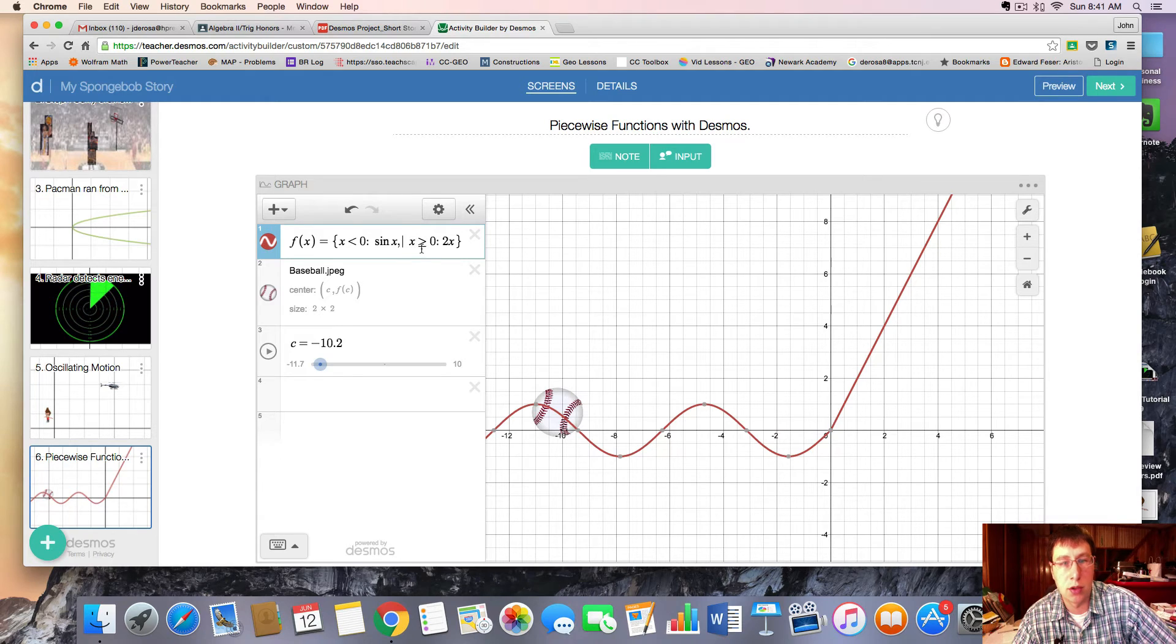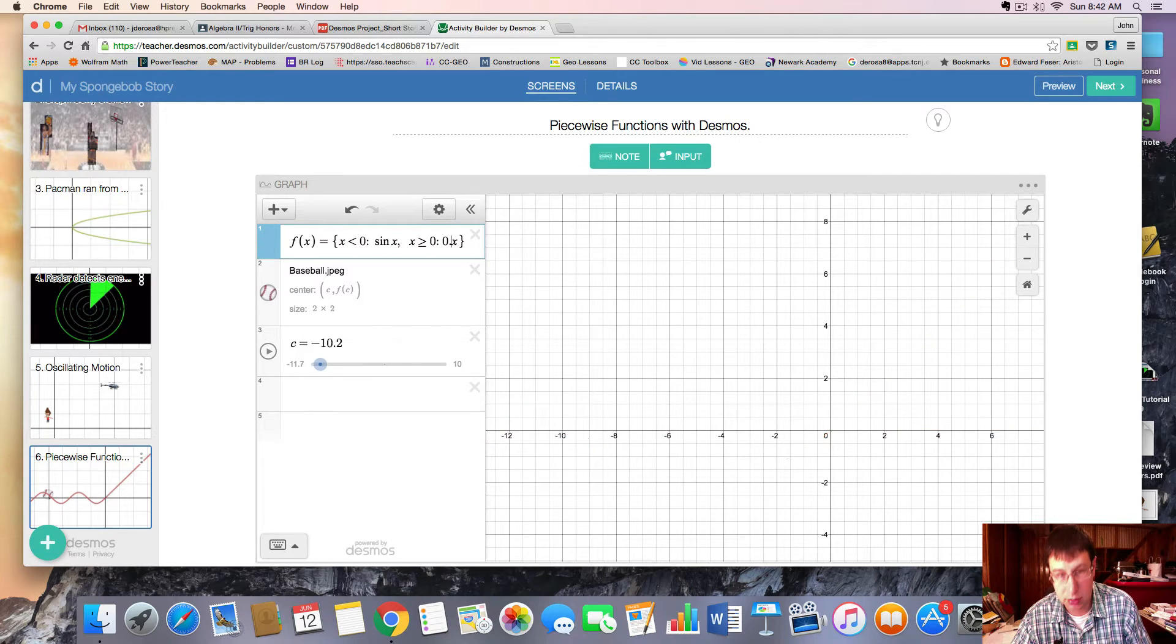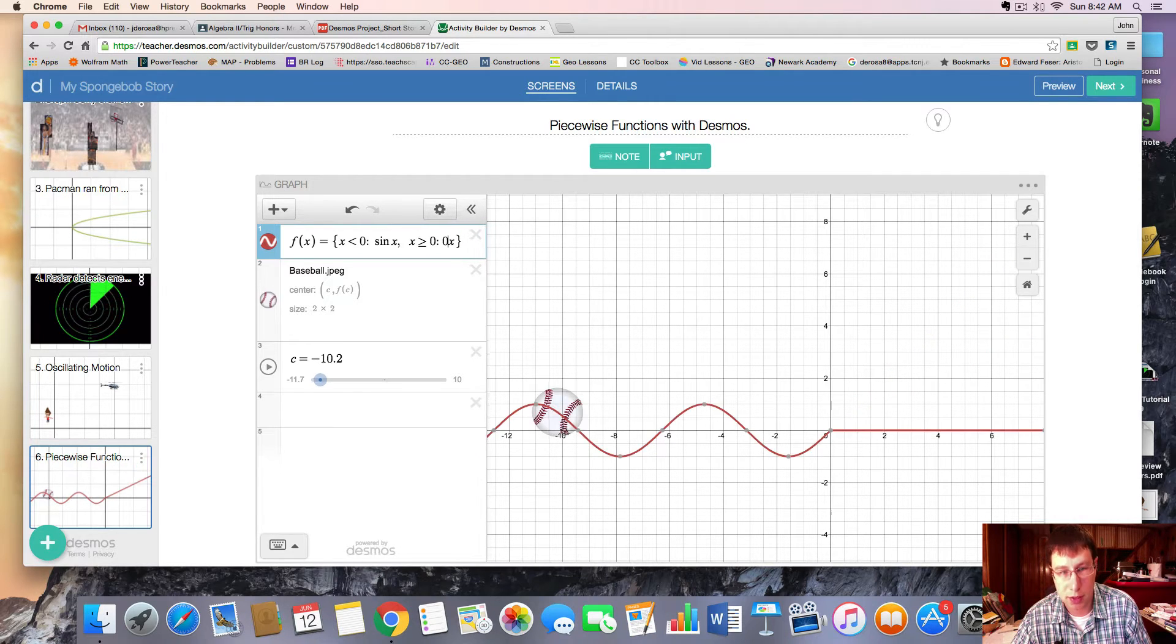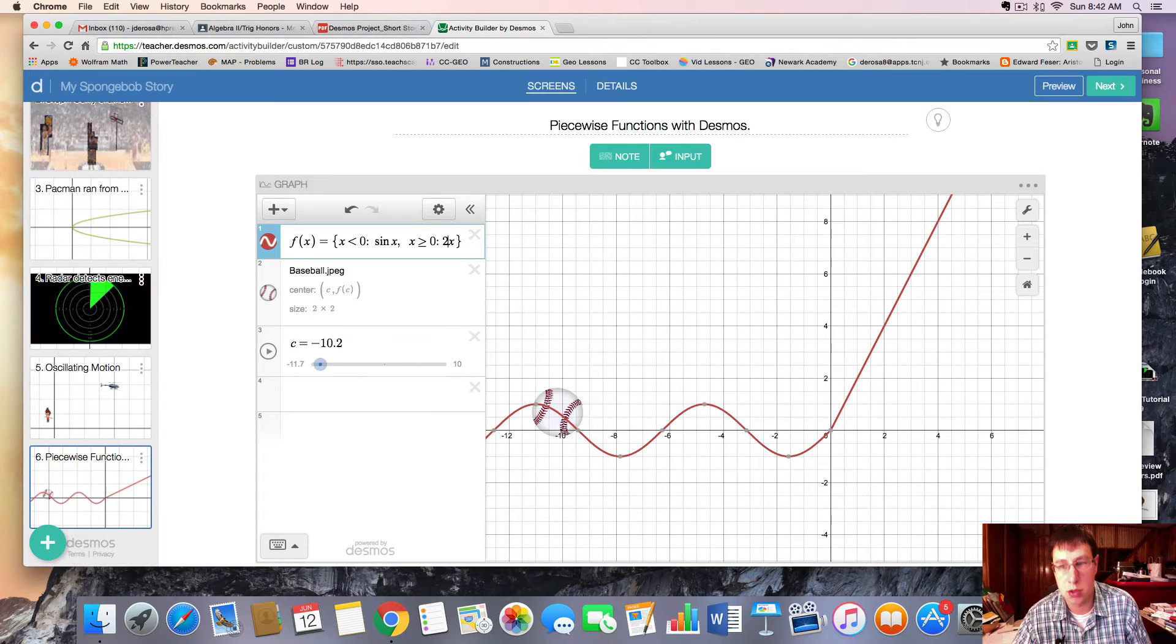And then you have to tell the program when you want to use the different rule. So when x is greater than or equal to zero, we want to use the function rule 2x. Or you could change the slope. 4x will be steeper. 0.5x will be less steep. It's up to you. I'll keep it as 2x for now.